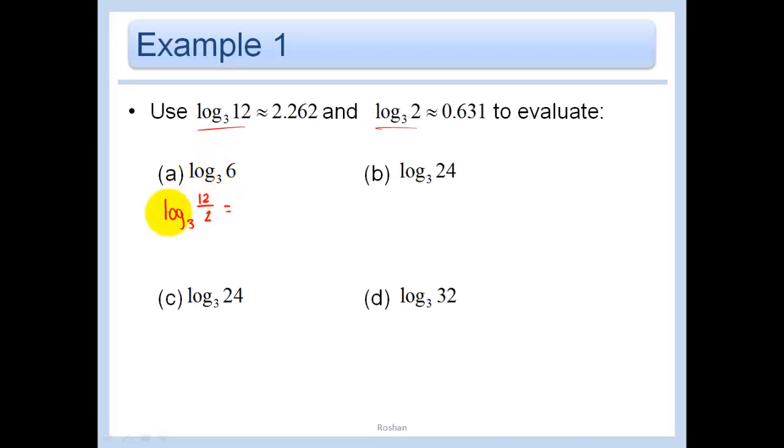In other words log base 3 of 6 is equal to log base 3 of 12 minus log base 3 of 2 using the quotient property and so we just have 2.262 minus 0.631 in other words 1.631